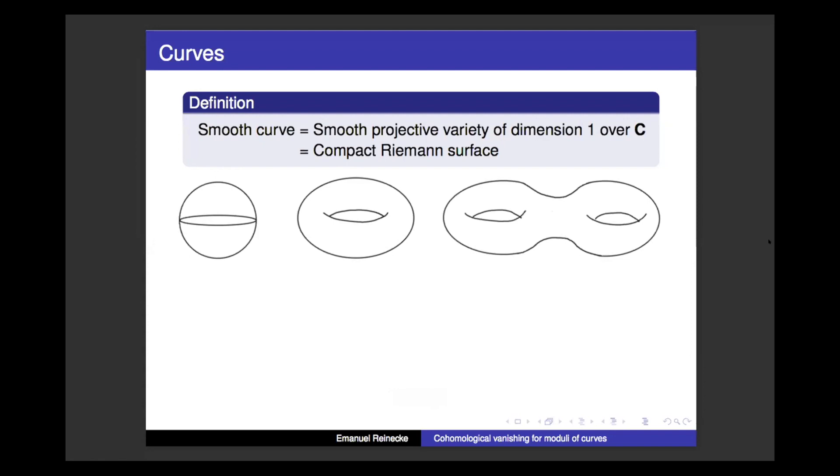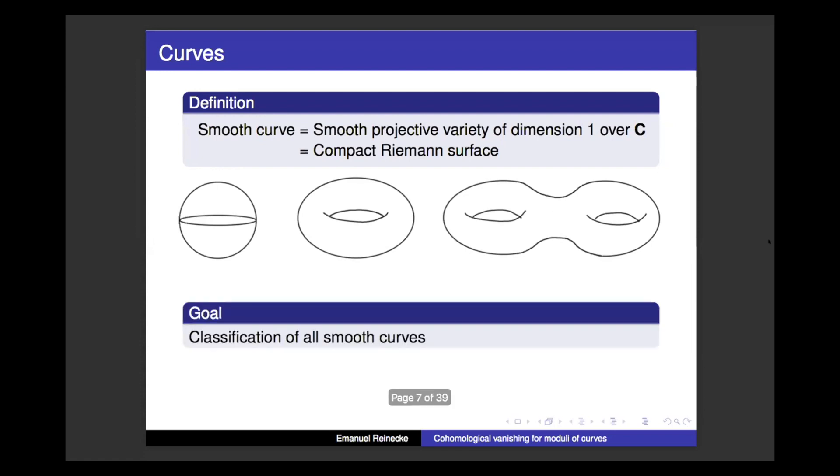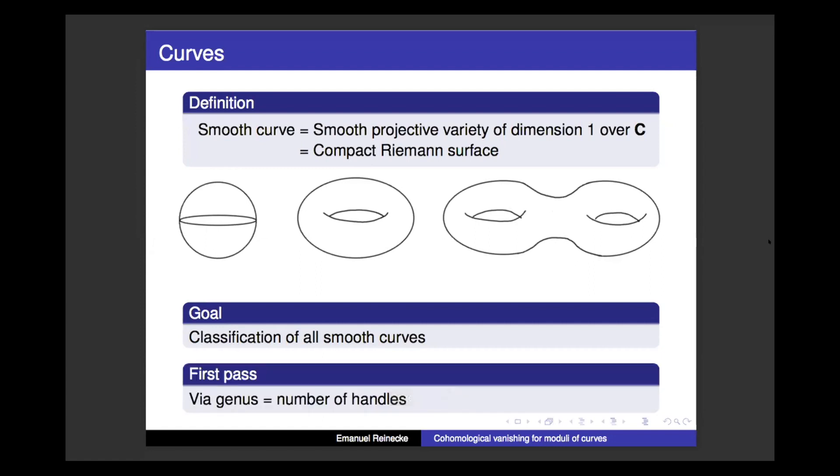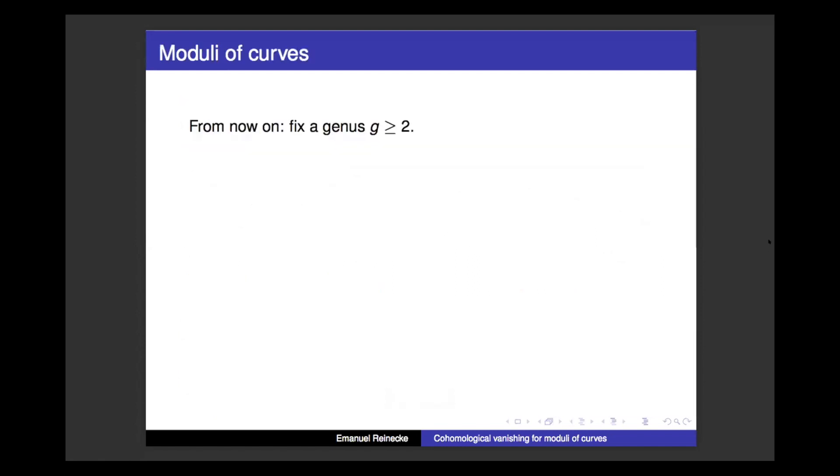And now, if we have introduced this class of objects, one natural question could be if we can classify all these objects that fit this definition. And maybe a first class of such a classification would be by the number of handles that I've already mentioned. So this is the genus that most of us have probably seen. On the left, we'd have genus zero, then genus one, and then genus two, so two handles, and you can keep going. Now, this genus completely determines the structure of these curves as topological surfaces, but it doesn't tell us much about the complex structure.